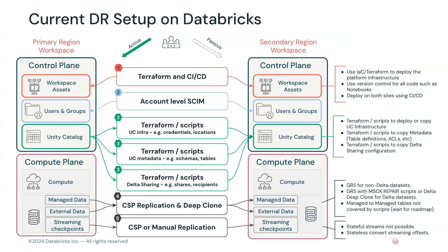What that means is you have a centralized repository of notebooks, which could live in a Git provider — Azure DevOps, GitHub, or whatever that might be — and then a repository of Terraform defining things like your clusters, your networking, and anything else that can be stored in those Terraform files. If you already have this set up for your primary workspace, all you need to do is also push those changes to your secondary workspace. It's essentially a release process — every time something changes, a notebook changes, a job changes, that change gets pushed to both workspaces in parallel, so you always have a mirror image of your primary and secondary.